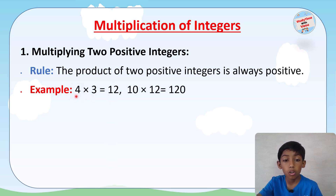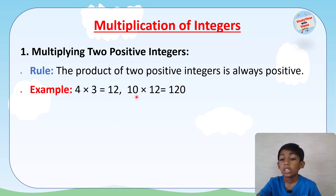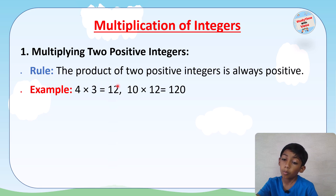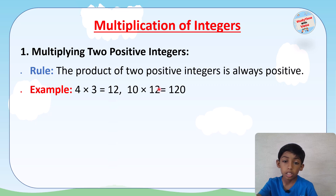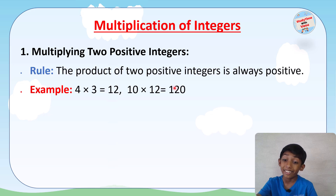For example, 4 × 3 equals 12. Here, four and three are both positive, so the result is also positive. Another example: 10 × 12 equals 120. Here these two numbers are positive, so the result is also positive.